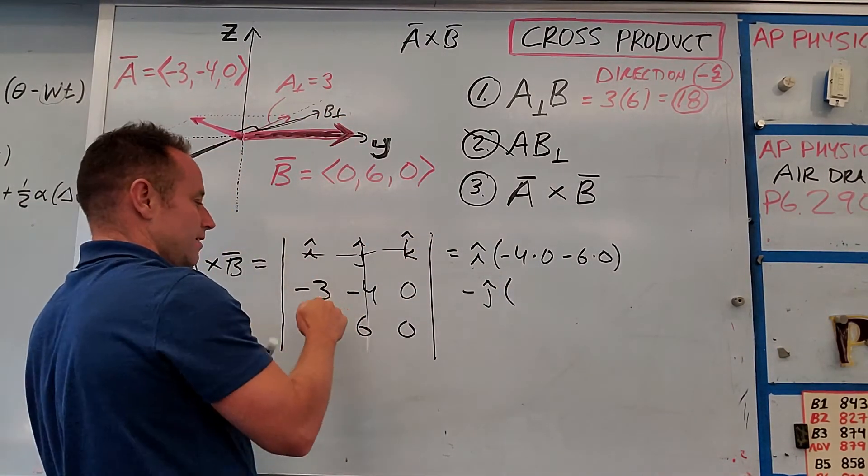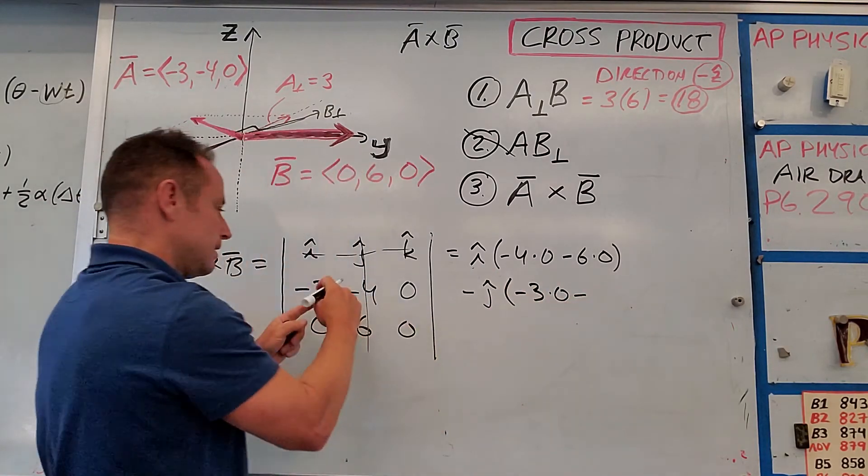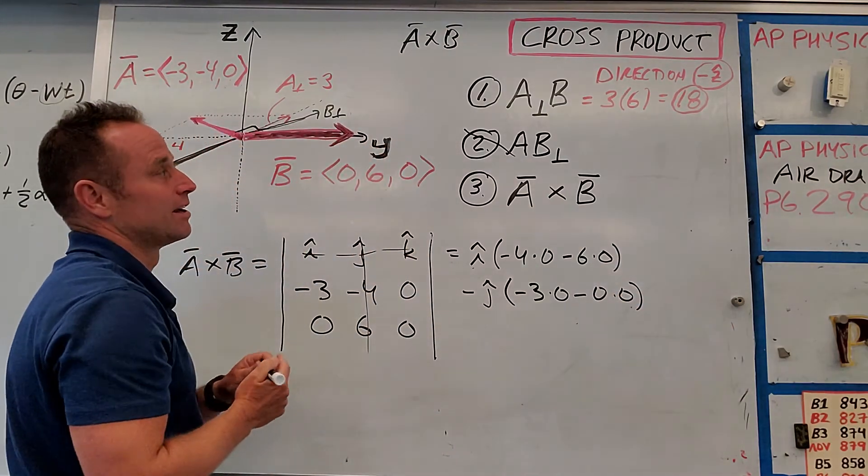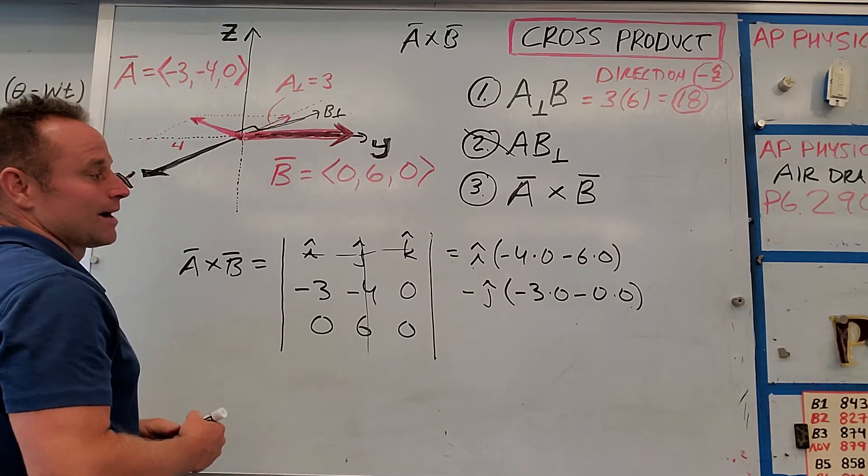And so then what you do is you say, okay, I've got negative 3 times 0 minus 0 times 0. So we get nothing again. And we kind of do that because we know this thing is going to point in the negative Z hat direction anyway, or negative K hat.